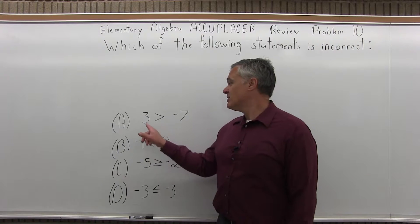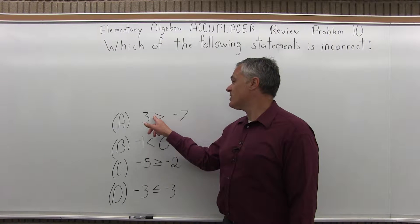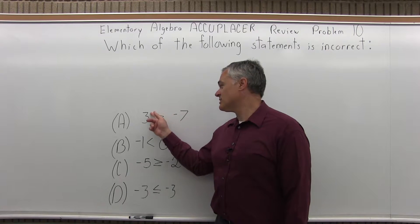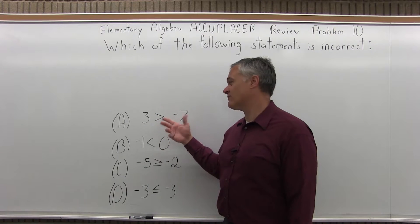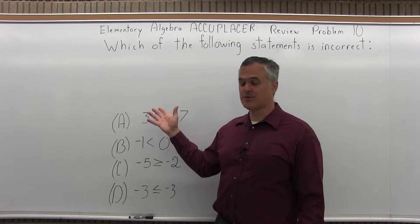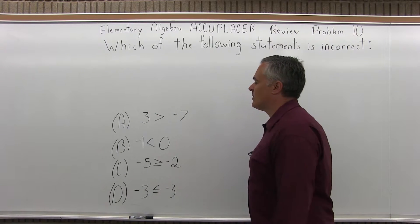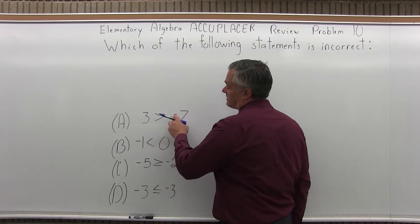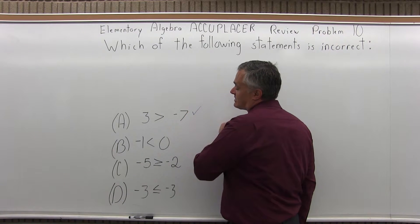So option A, we read three is greater than negative seven. There are a lot of ways to interpret these inequality symbols. A very common one is it's the mouth of an alligator that eats the bigger number. Silly, but if it works that's good. Three is greater than negative seven. This positive number is bigger than a negative number. Option A is a correct statement.